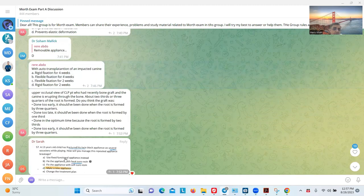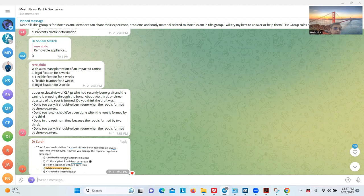Upper incisor cleft lip impression, recently dropped. About two-thirds or three-fourths of the root is formed. Let me see. And the canine is erupting through the bone. Recently—how recently I don't know. About two-thirds or three-fourths of the root is formed. Do you think that the graft was done too early, done too late, or done at optimum time? Because the root is formed by two-thirds—done too early.